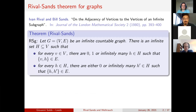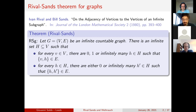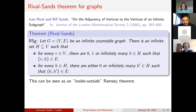Let's start with some history. In 1980, Rival and Sands proved a combinatorial theorem we call RSG — Rival-Sands for Graphs. Let G be an infinite countable graph, where a graph is a pair of a set of vertices and a set of edges. Then there is an infinite set H such that for every point b in the vertices of G, there are either zero, one, or infinitely many neighbors of b in H.